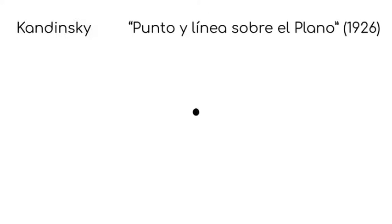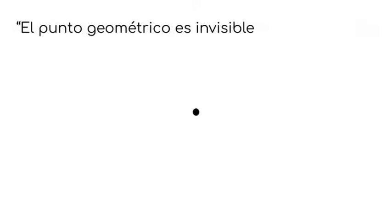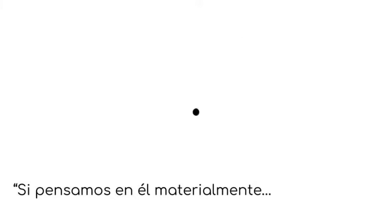Según Kandinsky, pintor y teórico del arte, en su libro Punto y línea sobre el plano de 1926, dice que el punto geométrico es invisible, un ente abstracto. Si pensamos en él materialmente, el punto se asemeja a un cero. En dibujo, el punto es el elemento básico, el inicio, una existencia que interrumpe la hoja en blanco, una semilla gráfica, la creación en su forma más básica y elemental.